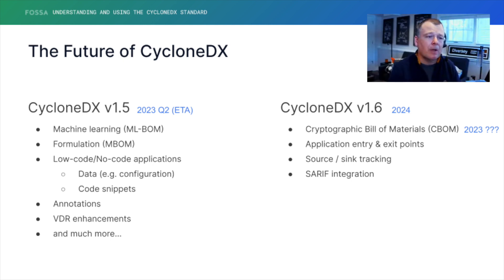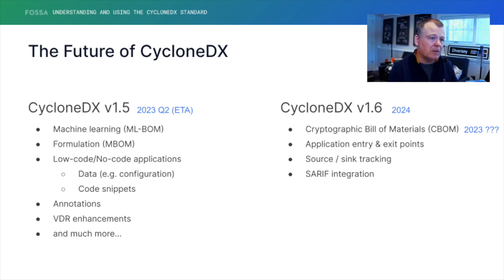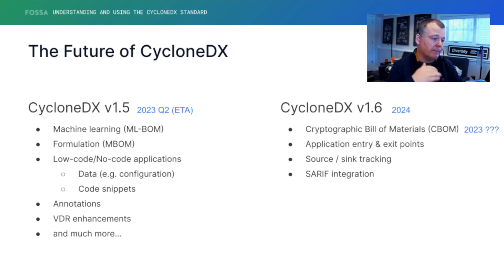We're also adding a bunch of other things, including commercial licenses. We're adding a ton of fields just for commercial license support. While open source may rule the world and license support for that is great, there is just as much demand for commercial license support in the SBOM use case. I think it's like a dozen or so fields just to support commercial licenses.